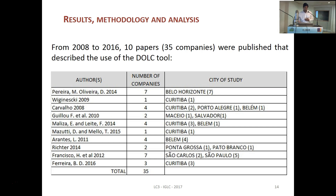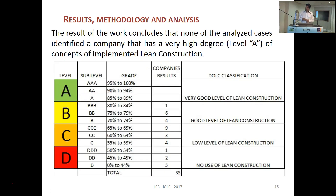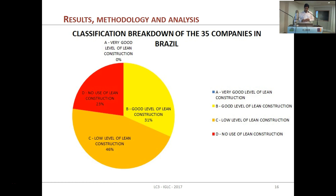From 2008 to 2016, 10 papers were published across 35 different construction companies. Here we have the authors, the different companies, and the cities of the studies. All studies were conducted in Brazil, because the work was initially made in Portuguese, so it was not in English. Brazil is a special case — we are in the top 3 in our Lean Construction group, but we didn't find a company with Level A. I found only one company with Level B, six companies with Level WB, and four companies with Level B3. That means 31% with a good level of Lean Construction, 46% with a low level, and 23% with no or very little Lean Construction.